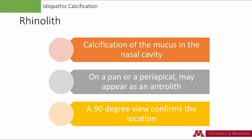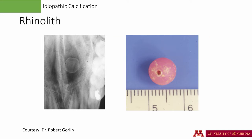Rhinoliths are calcifications of mucosa in the nasal cavity. On a panoramic or periapical radiograph, this may appear as an antrolith. A 90-degree view confirms the location of a rhinolith. This nice example of a rhinolith — a circular radiopacity — is actually a plastic bead that a child had pushed into her nose. The bead remained in the nose for almost a year and eventually created a calcified layer around it.